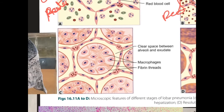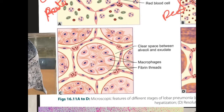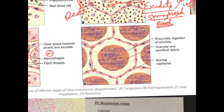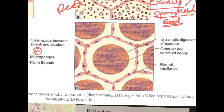In the next stage, neutrophils decrease in number and macrophages come into action. The fibrin deposits contract, creating a clear space between the alveolar wall and the exudate. Air volume is still low and hardness remains, so it is called gray hepatization. Finally, in the resolution stage, all the debris is cleared by enzymatic digestion and exudation, normal capillary architecture is restored, and only granular remnants remain.